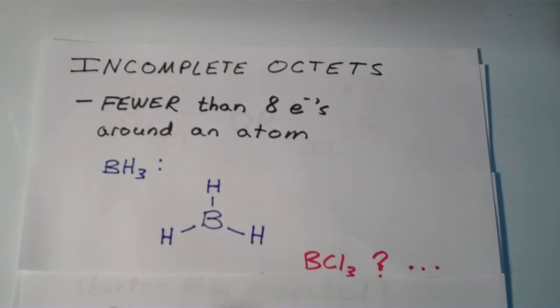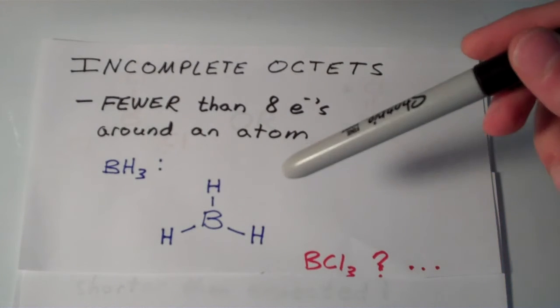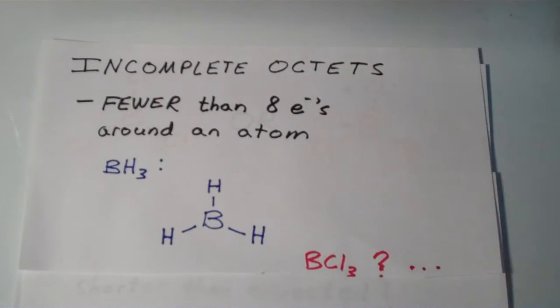If we take boron trihydride, or BH3 for instance, a compound which has been known to exist for a long time, and draw its Lewis structure, we'll get something that looks like this. Notice that in this structure, boron does not have an octet.